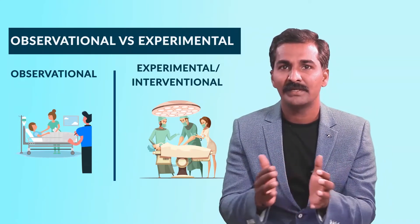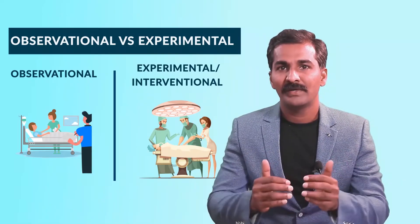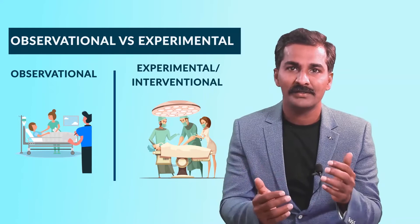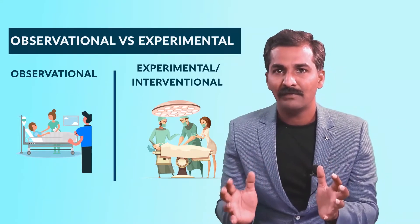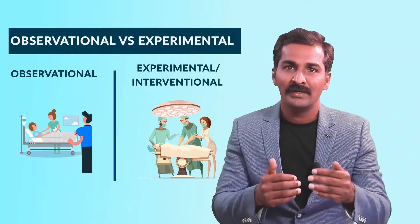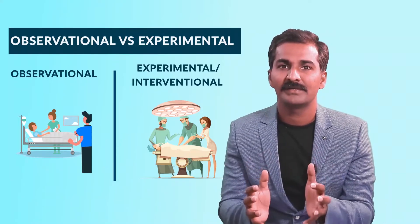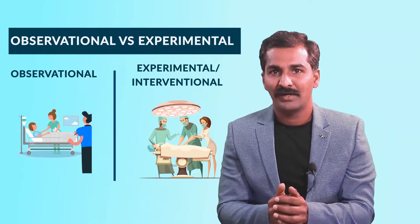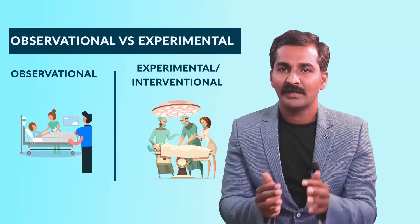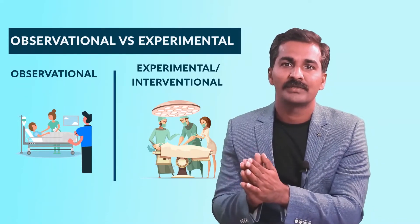But there is a thin line between observational and intervention studies in certain situations. For example, in your hospital there are two interventions available for hernia — two different kinds of mesh being used. Both are already approved treatments, used based on cost and patient or consultant preference, with no random selection of patients into treatment groups. Over time you collect outcome data on these two surgical methods and compare them. The intervention is being done as part of the hospital treatment protocol, not as part of your research study. That is considered an observational study, not an intervention study.